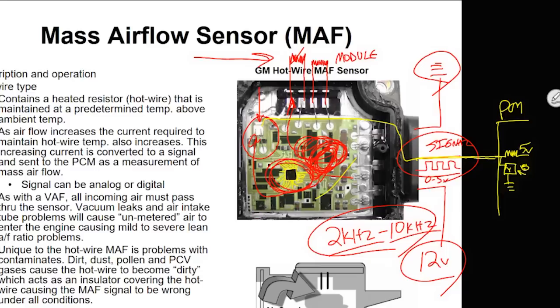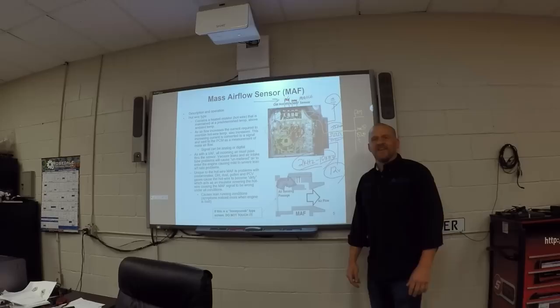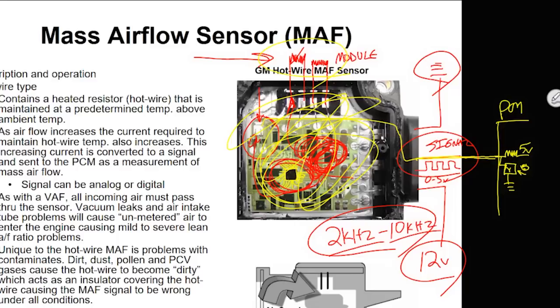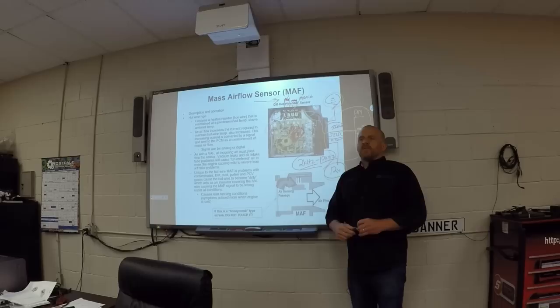Do you understand that when we troubleshoot this, understanding the internal circuit doesn't help me diagnose it? That helps me maybe describe what's going on inside, but where does my diagnosis need to be focused with this mass airflow? I need to worry about the wires — are they contaminated? Is it reading properly? I need to know that my 12-volt feed is good and that my ground is good.